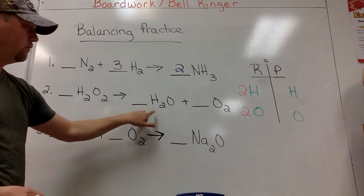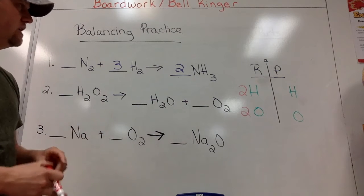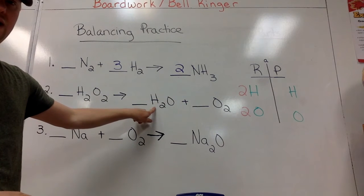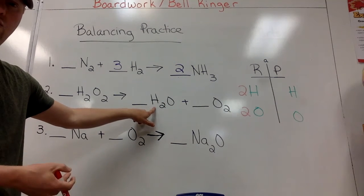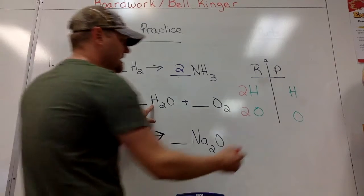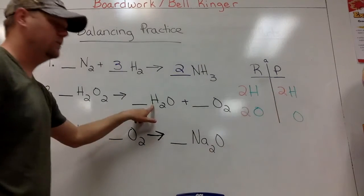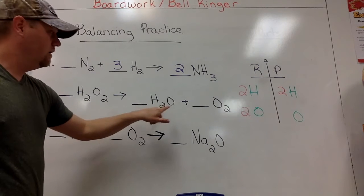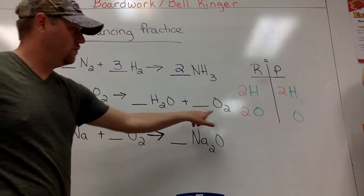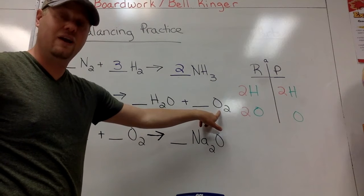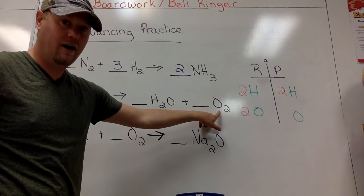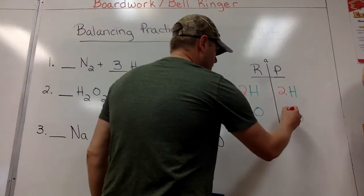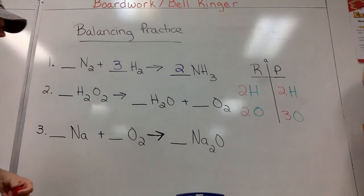We need to figure out how many of each element we have. There's no big number in this blank, but both the H and the O have little subscripts. We have two hydrogens and two oxygens on the reactant side. On the product side, the little subscript two is only tied to that hydrogen — not to the oxygen — so we've got two hydrogens there. But we have one oxygen in water and two oxygens in O₂, so we add those together and get three oxygens on the product side.